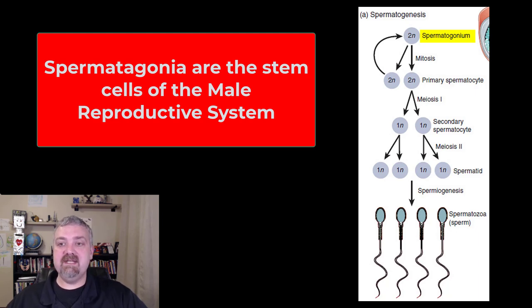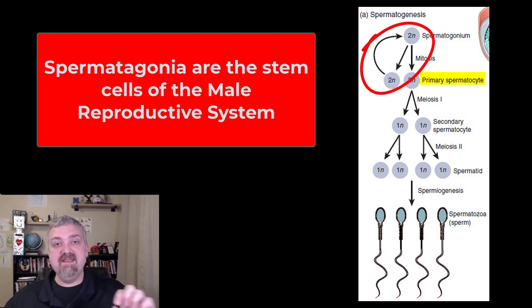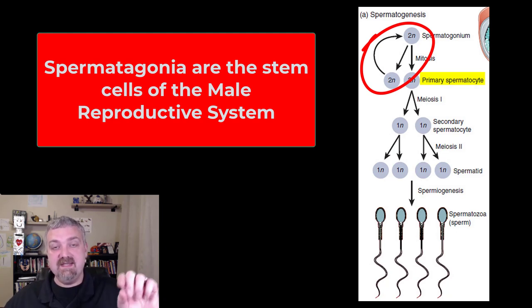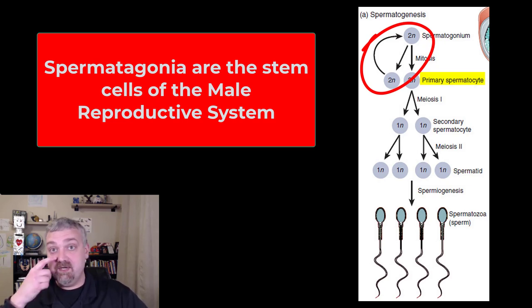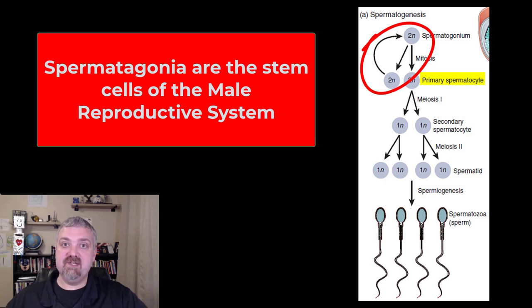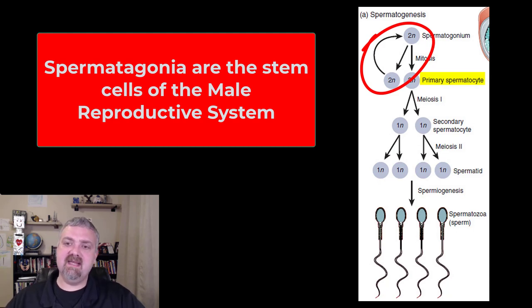These cells undergo mitosis where one spermatogonium produces two primary spermatocytes. Just like other stem cells, one of those two cells goes back and becomes a stem cell, so you have a seemingly endless supply of sperm cells as long as this process occurs. This starts at puberty and continues essentially without end. The spermatogonium undergoes mitosis to become a primary spermatocyte.